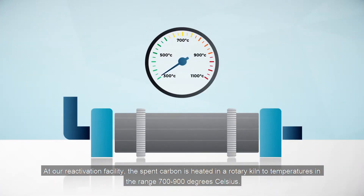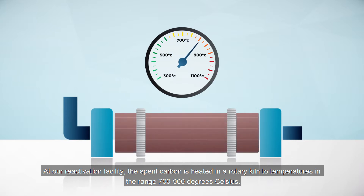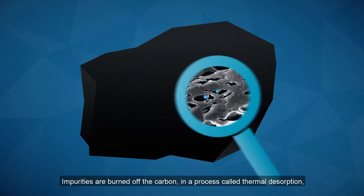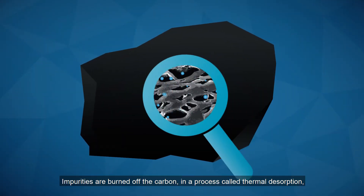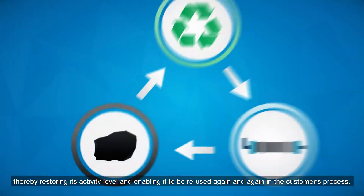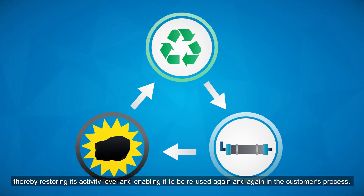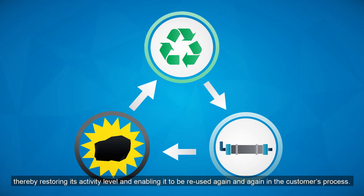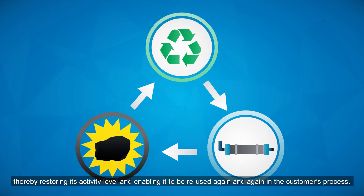At our reactivation facility, the spent carbon is heated in a rotary kiln to temperatures in the range of 700 to 900 degrees Celsius. Impurities are burned off the carbon in a process called thermal desorption, thereby restoring its activity level and enabling it to be reused again and again in the customer's process.